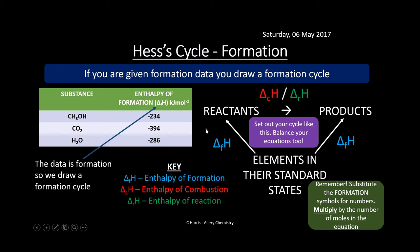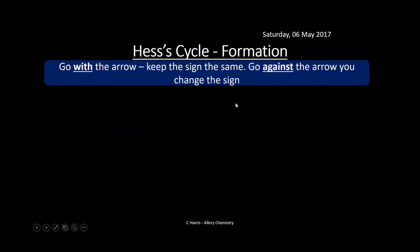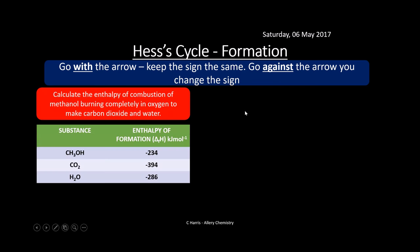Remember: when using these numbers, you're substituting them for the formation symbols and multiplying by the number of moles in the equation. If we go with an arrow, we keep the sign the same. If we go against the arrow, we change the sign. Calculate the enthalpy of combustion of methanol burning completely in oxygen to make carbon dioxide and water. The data given is formation data, so we draw a formation cycle.